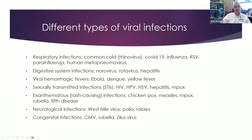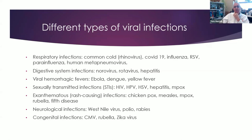There are also digestive system infections. Norovirus has been around for a long time — it's the famous cruise ship virus, highly highly transmissible. You can get it from contaminated food, and it's been very widespread this winter in the northeast. Typically it causes diarrhea but also nausea and vomiting. It's self-limited and we don't really have a treatment for it. Rotavirus typically affects kids, and of course hepatitis comes in all different kinds.